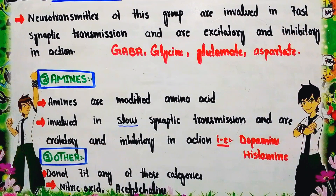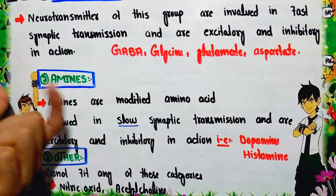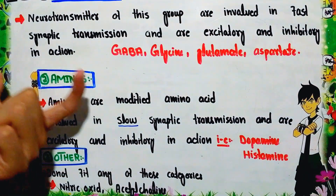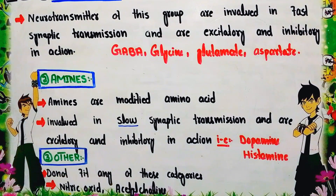The third chemical category is 'others' — neurotransmitters that do not fit into amino acid or amine categories. Examples include nitric oxide and acetylcholine.